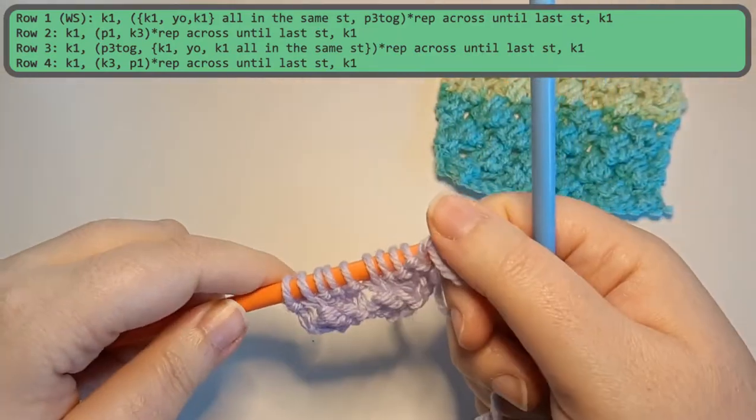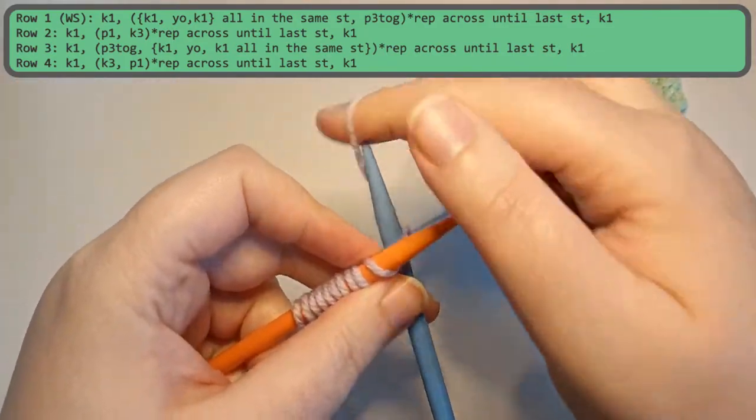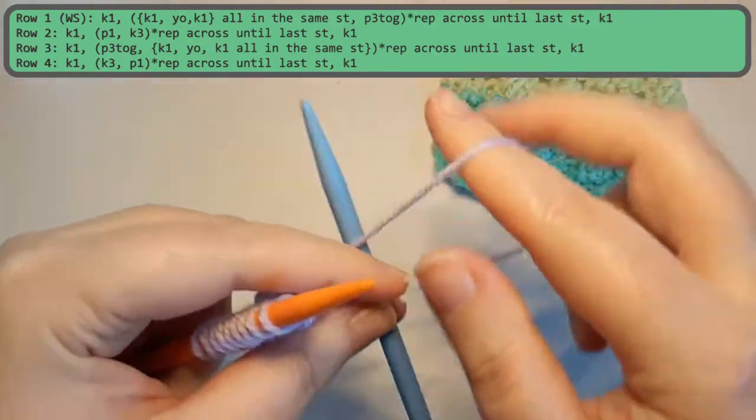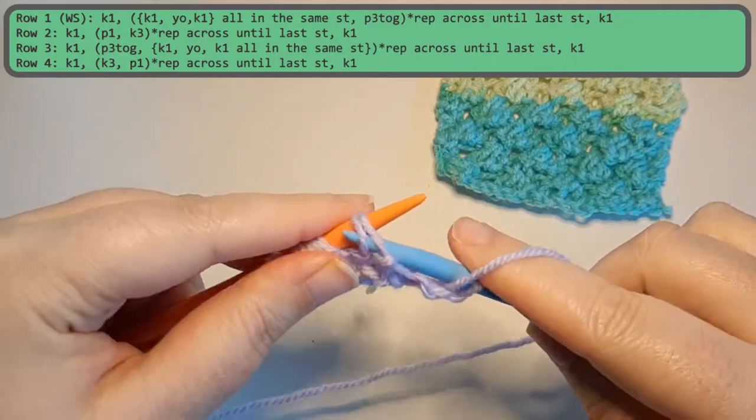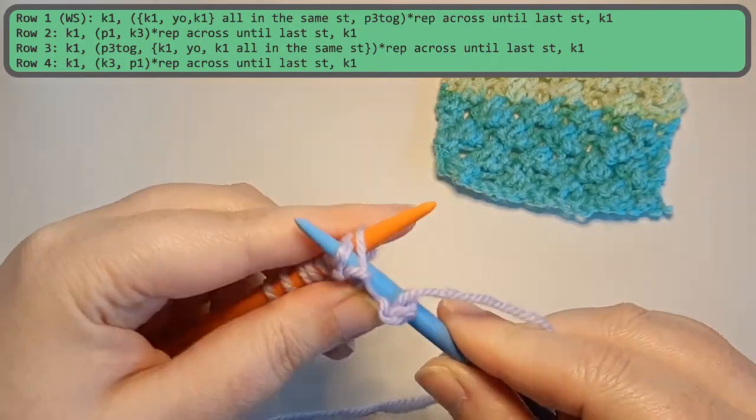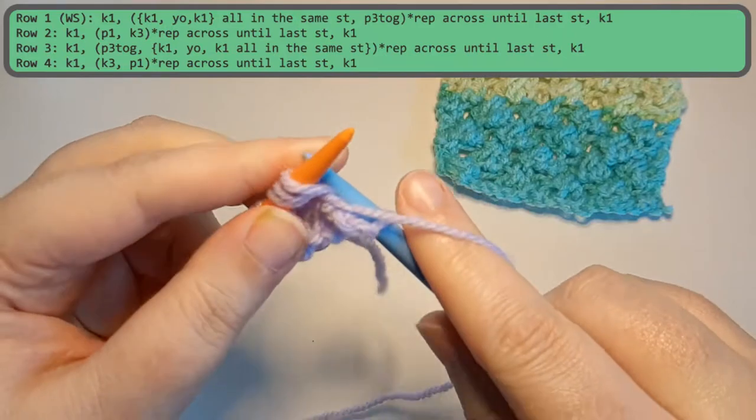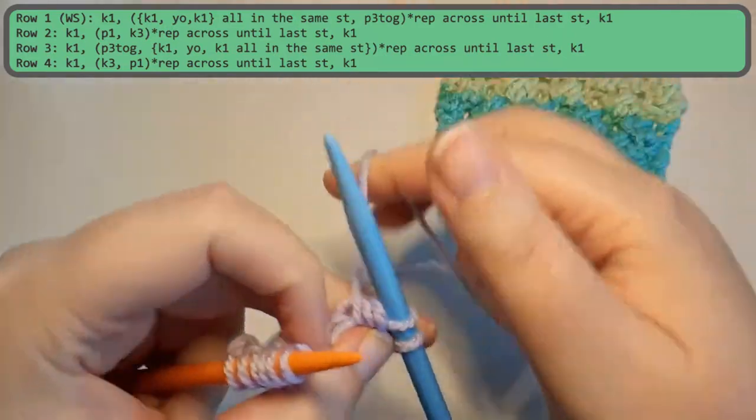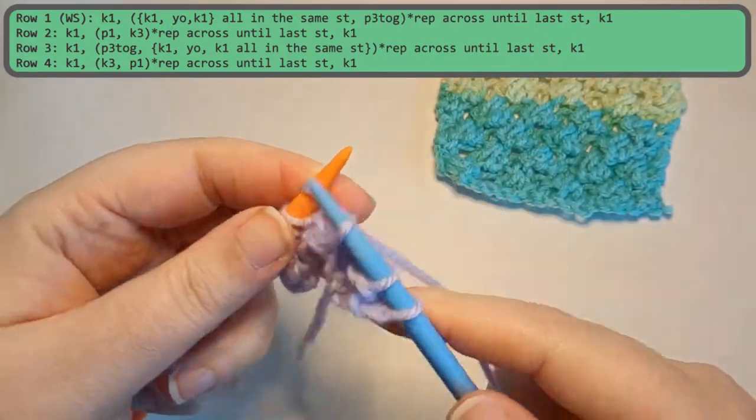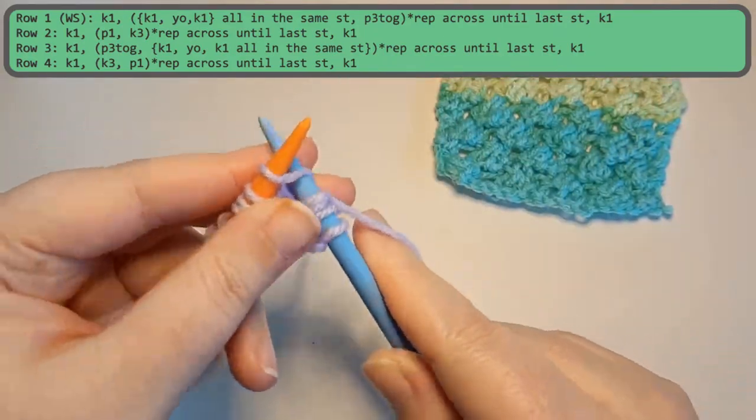So now we're going to turn our work and we are going to start off with a knit. And then we are going to start by our repeat of purling three together. Followed by knitting one, yarning over, and knitting one in the same stitch.